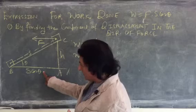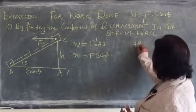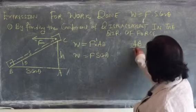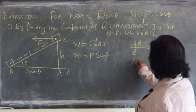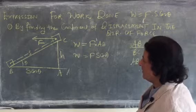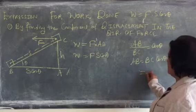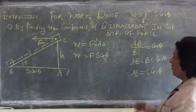So, base AB upon hypotenuse BC, that is cos theta. So, AB equals BC cos theta. And what is BC? That is S. So, AB is equal to S cos theta.